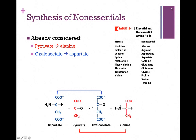As you can see, it's readily reversible, and so depending on the level of substrates, we can form either alanine or aspartate. As we go through these reactions, let's check off our list of non-essentials as we learn how they're synthesized. So we check off alanine and aspartate.